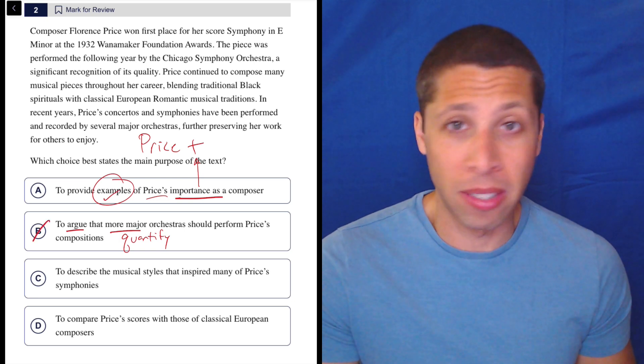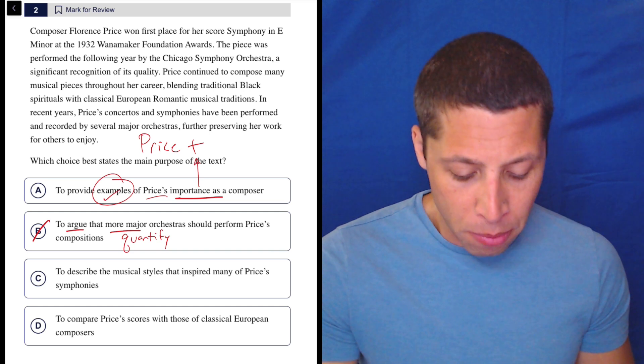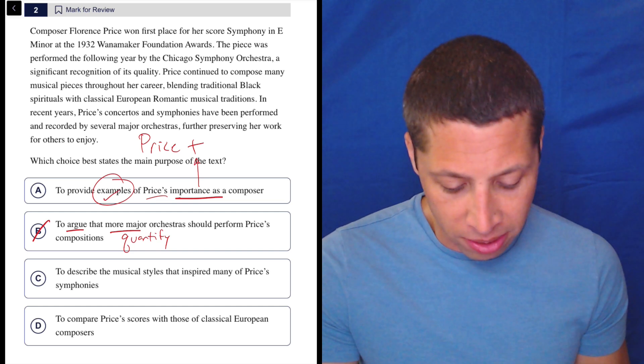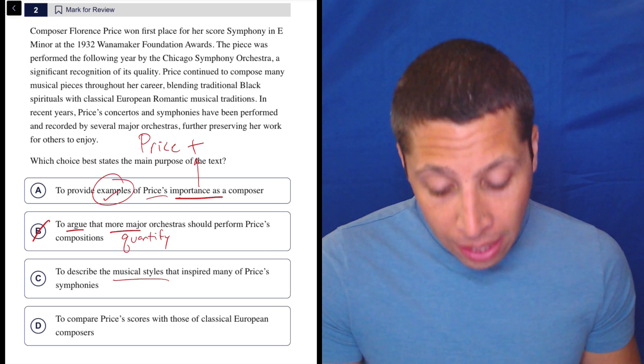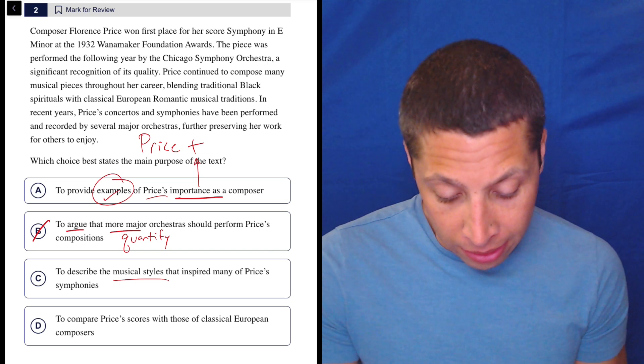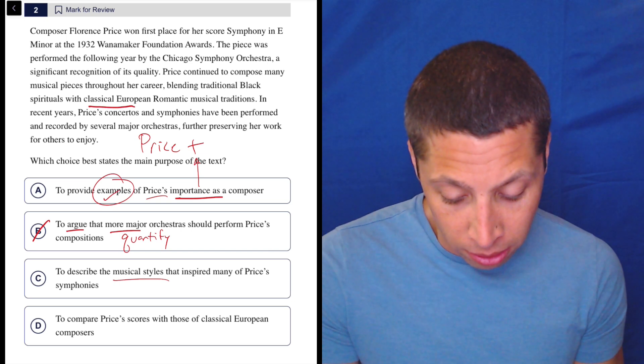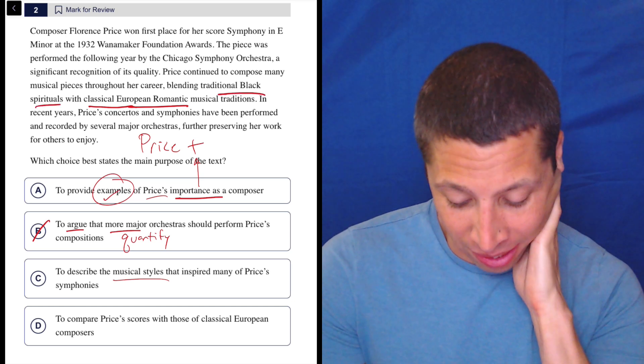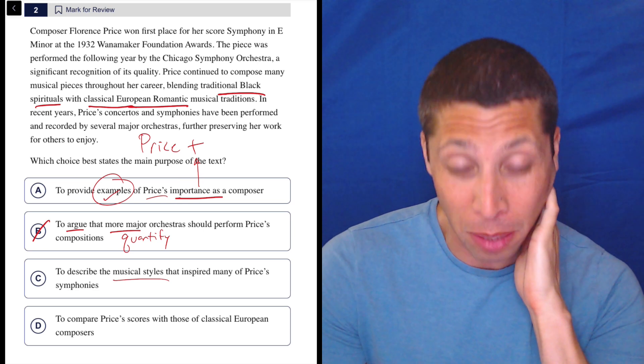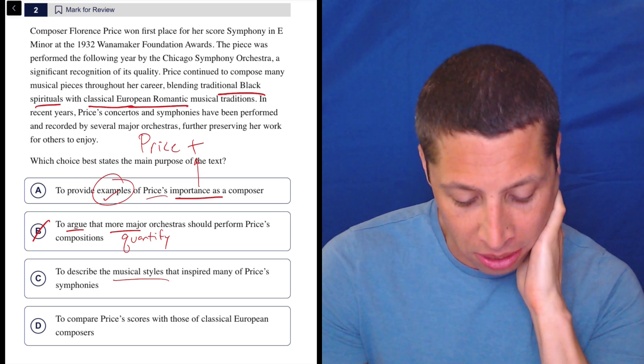C, to describe the musical styles that inspire many of Price's symphonies. Well, what are the musical styles? Turn that into a question. It does say that she's blending, let's see here, classical European romantic musical traditions with black spirituals. But that's just one sentence kind of buried later in this thing. Is that really the point of the passage to describe those styles?